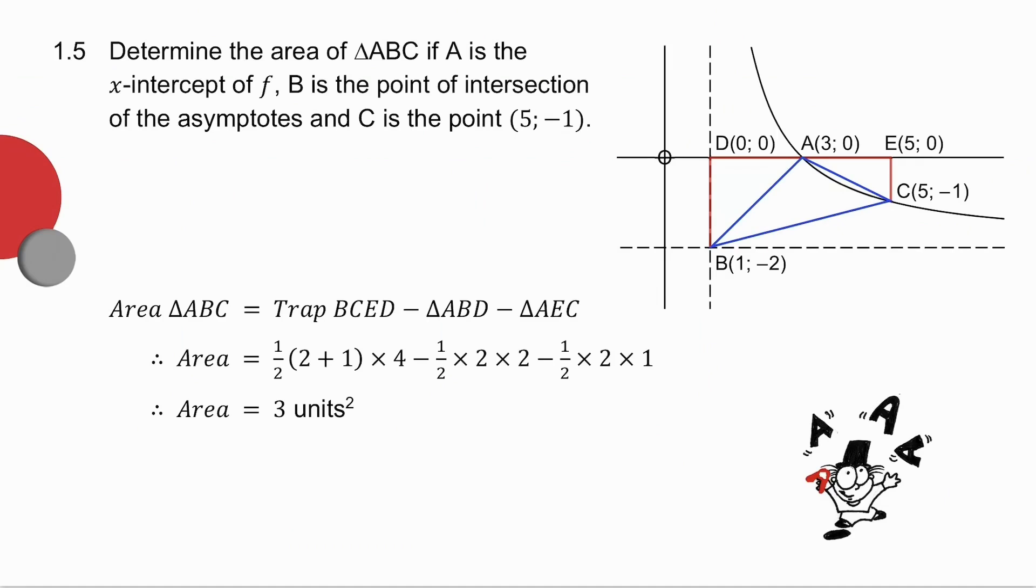So 1.5 asks you for the area of triangle ABC. So what I'm going to do is I'm going to take a trapezium and I'm going to subtract these two triangles. And if I take the trapezium and subtract those two triangles, I will get the area of triangle ABC, which is what I was asked. So let's have a look. D-B is two units long. D-A is two. A-E is two. And E-C is one. Now the formula for the area of a trapezium is half the sum of the parallel sides times the height between them.